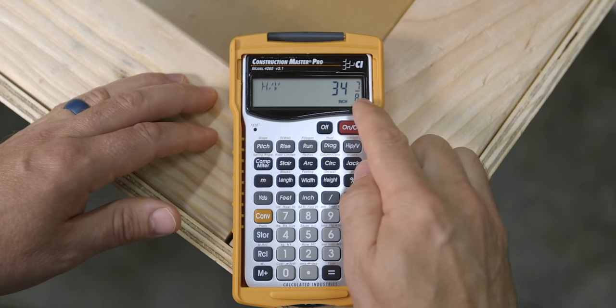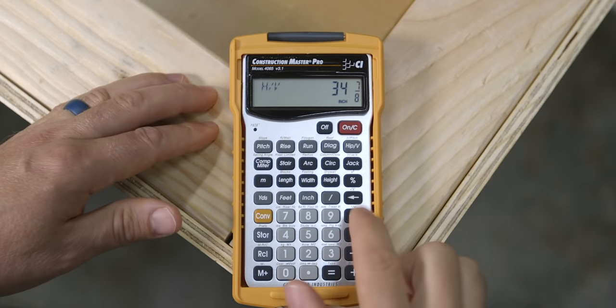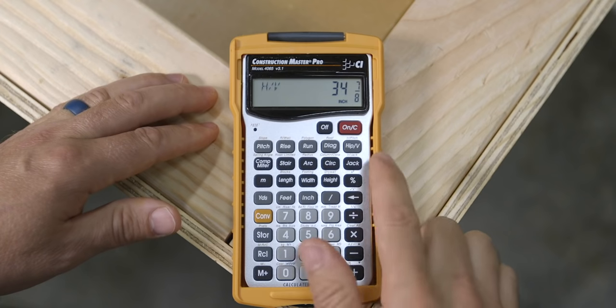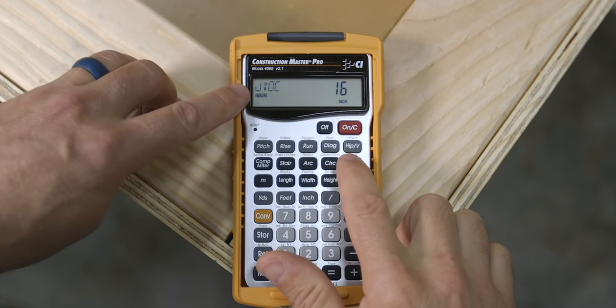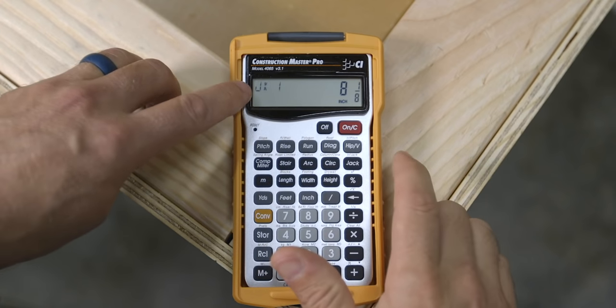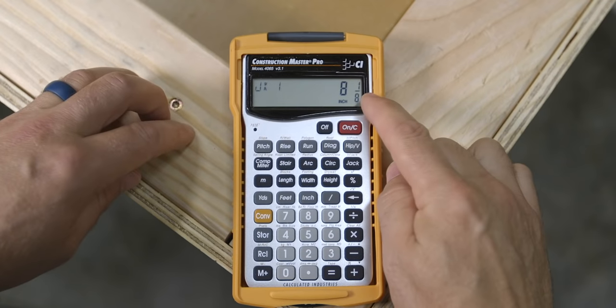There's one more number that we need to figure out before we clear the calculator out, and that is the jack rafter lengths. Still on the screen is 34 and 7 eighths. And all we have to do to find the first jack is to hit the jack button until you see jack number one, which for us is eight and an eighth.